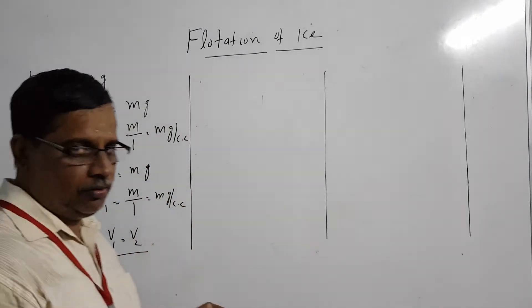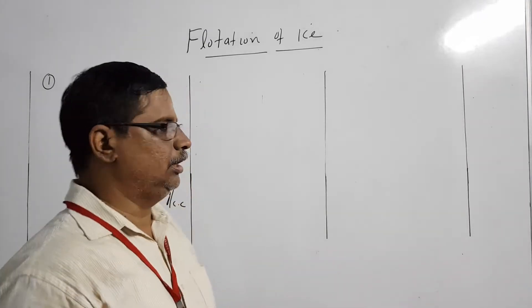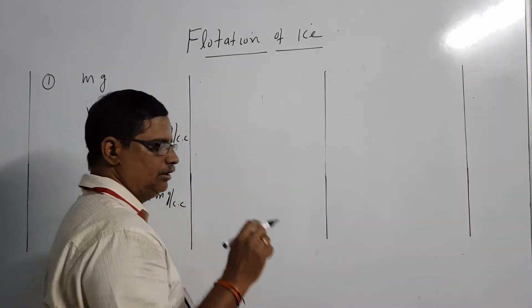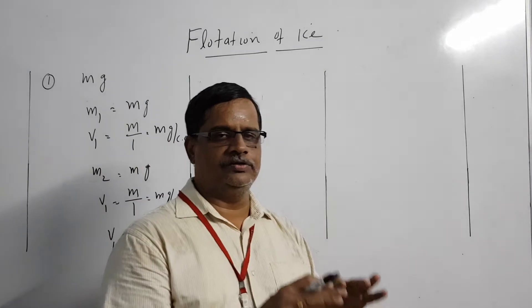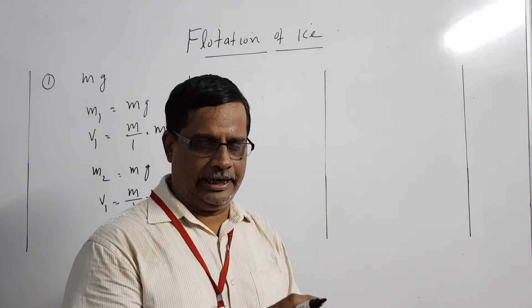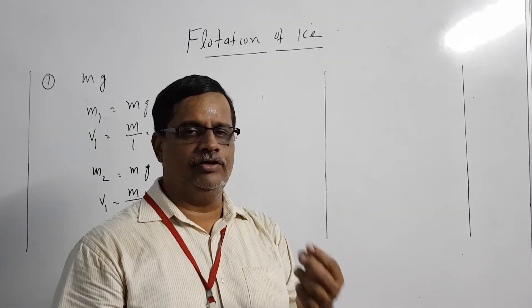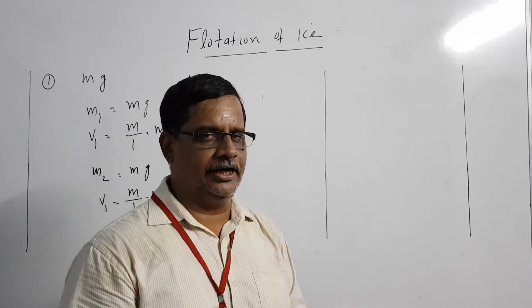So in the first case, when an ice block floats on the surface of pure water, upon melting there is no level change. Now let us look at the second case, where an ice block is floating on the surface of pure water, but this time with an object embedded inside it.